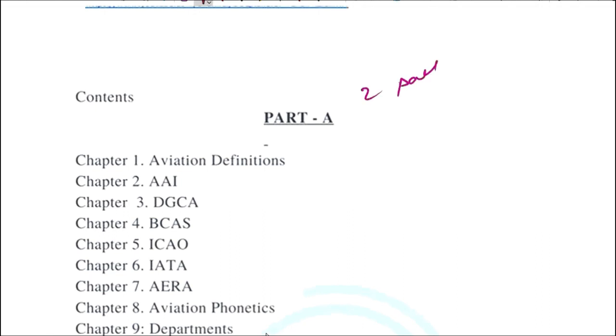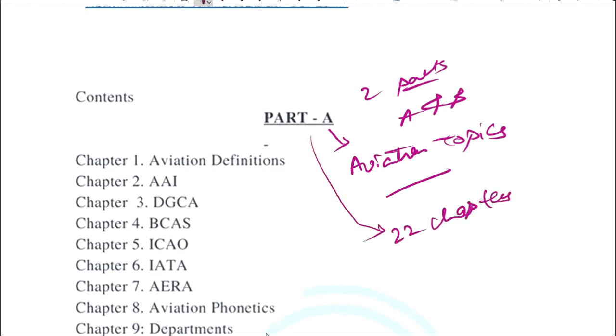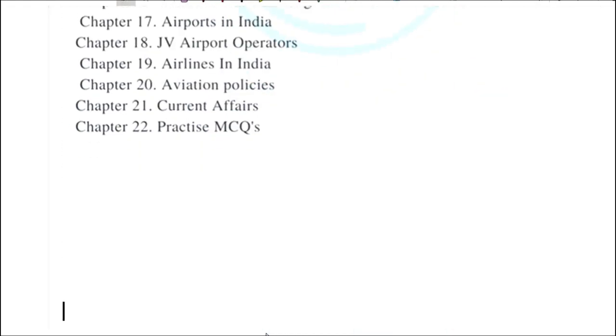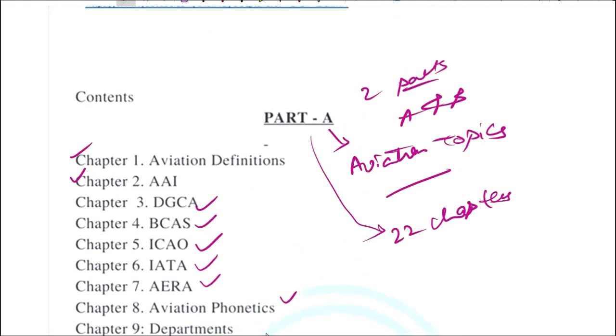Part A concentrates completely on aviation topics. There are 22 chapters in Part A. The chapter names are: aviation definitions, Airports Authority of India, DGCA, BCAS, ICAO, IATA, AERA, aviation phonetics, then departments.